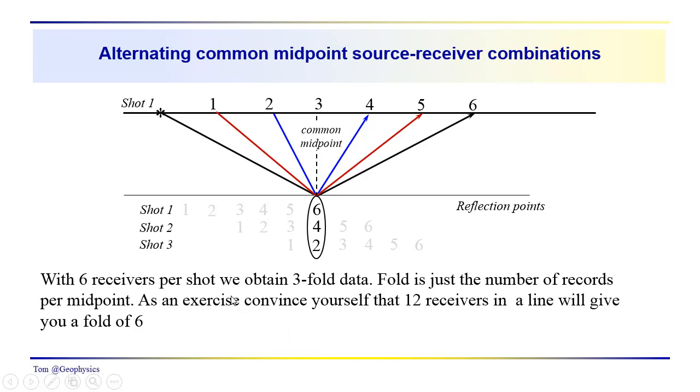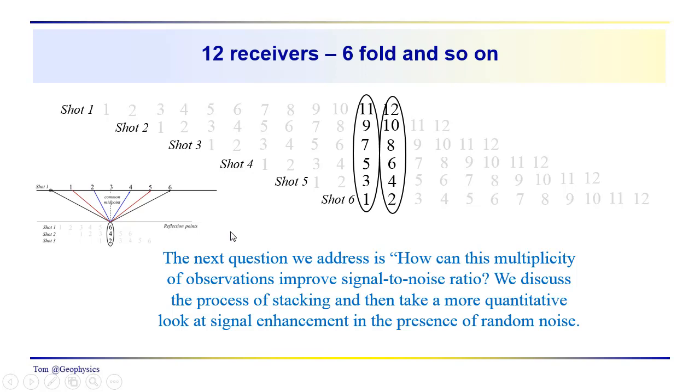So hopefully you've spent some time sketching that out and you'll see that you end up with receiver combinations, 11, 9, 7, 5, 3, 1, the odd receivers, 12, 10, 8, 6, 4, 2, and so on. These would be the recordings. These would be the recordings at receivers 11, 9, 7, 5, 3, and 1 that provide information from a common midpoint. If the layer is flat, that would be the same depth point, same reflection point. If the layer is dipping, it would be from at least a region which is close, spatially close to each other.